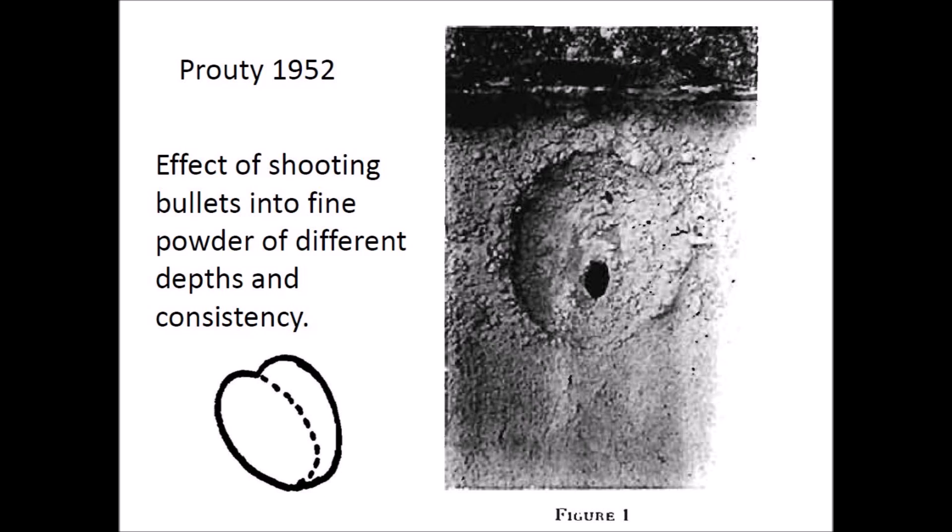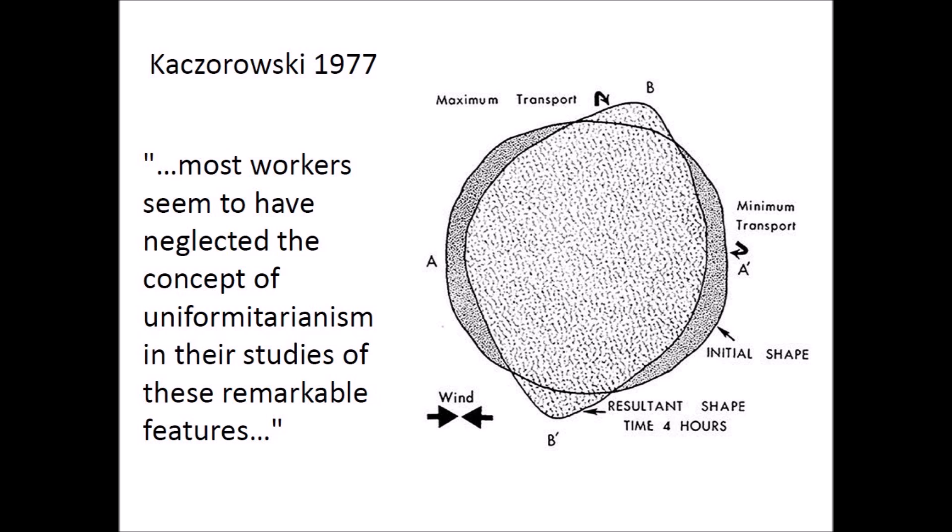Prouty spent a lot of time searching for magnetic anomalies within the Carolina Bays to try to confirm his meteorite hypothesis, but he was not successful. A thesis written by Raymond Kachorovsky in 1977 remarked that most workers seemed to have neglected the concept of uniformitarianism in their studies of the Carolina Bays. Kachorovsky proposed that the bays were created by the action of wind on pools of water, but did not specify how those pools originated. His experiment subjected a circular pool of water on a sand table to wind alternating in direction every 15 minutes for four hours; the resultant shape was pointy like an American football, which he called elliptical. The thesis was never published in a peer-reviewed publication, but is frequently referenced by proponents of wind and water mechanisms.